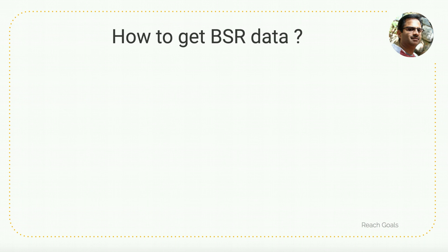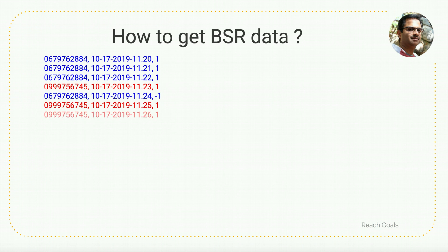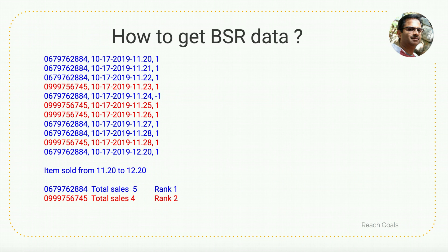Let's look at a sample log to understand how BSR data is calculated. In the Hadoop system, logs come in like this — in this example, I have two items: one ending with item ID 84 and another ending with 45. Tons and tons of logs get into the Hadoop system. Meanwhile, a parallel process runs in the background to calculate the number of items sold within the last one hour or one day. At the end, we get output like: for item ending in 884, total sales were five, so it gets rank one; for item ending in 745, total sales were four, so it gets rank two.